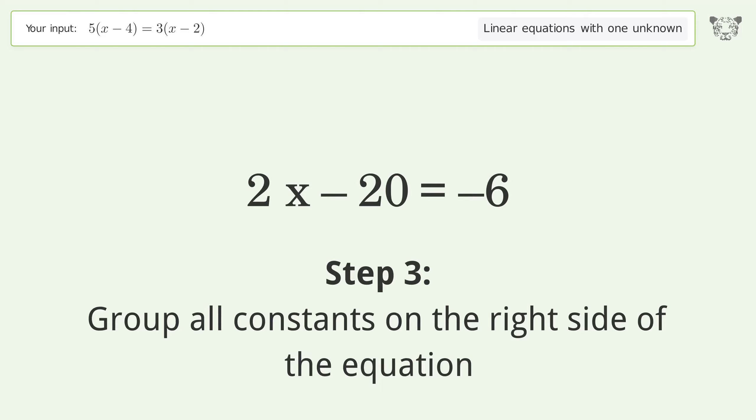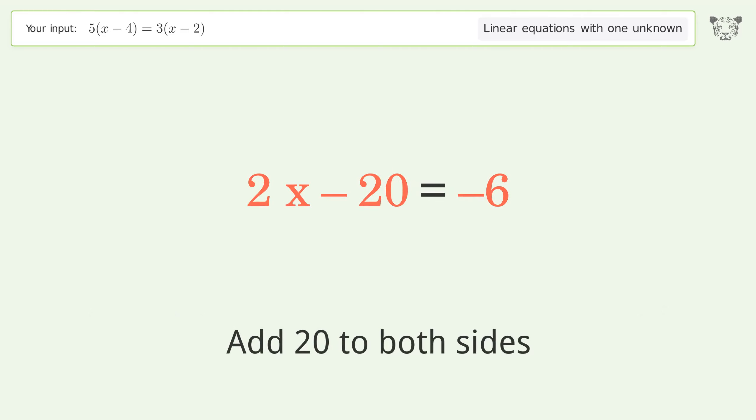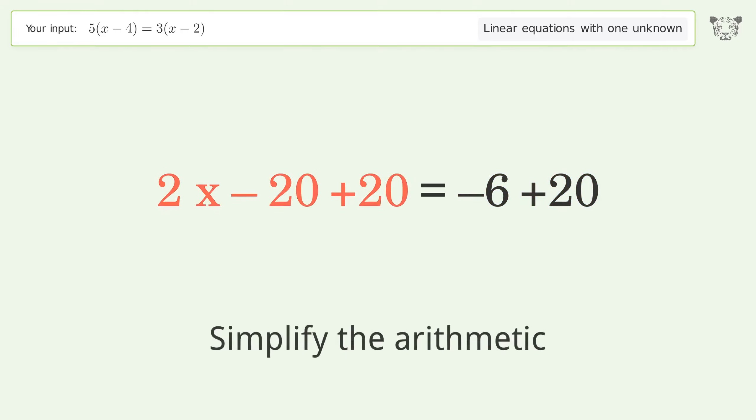Group all constants on the right side of the equation. Add 20 to both sides. Simplify the arithmetic.